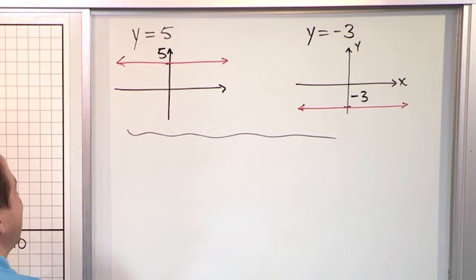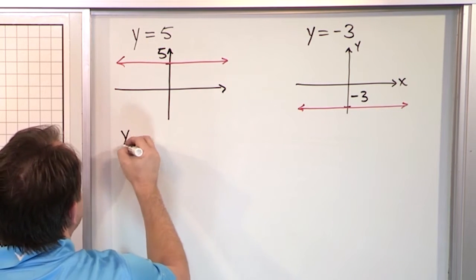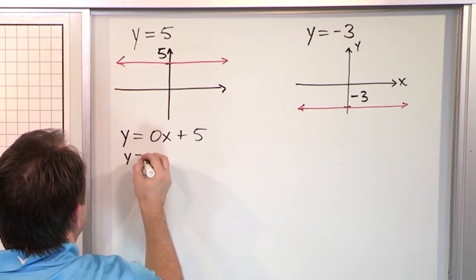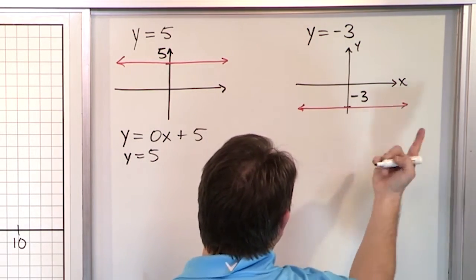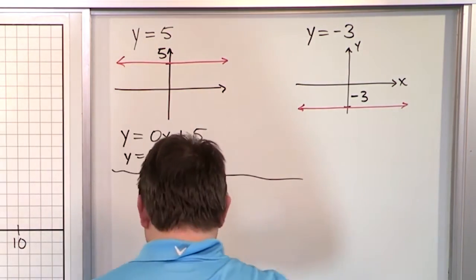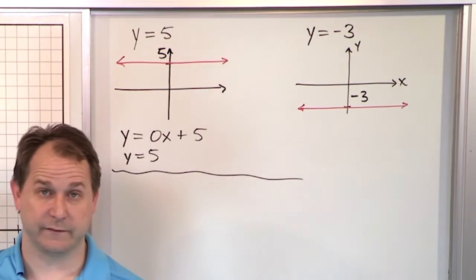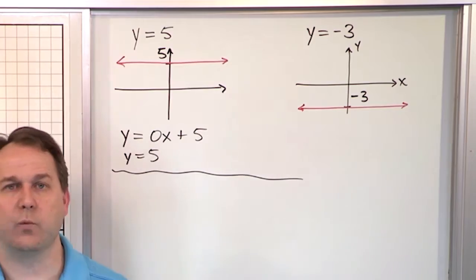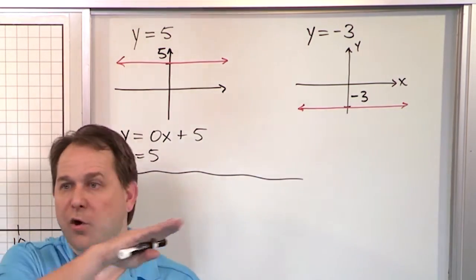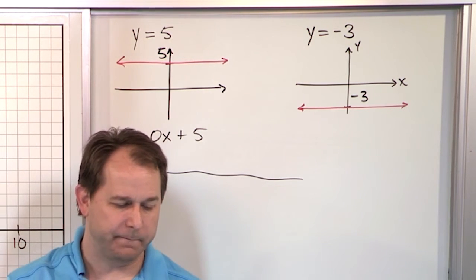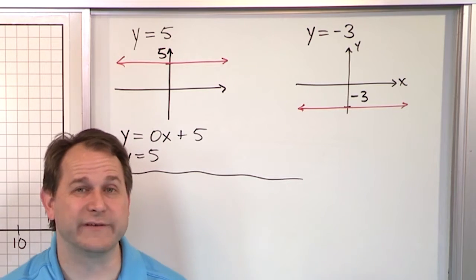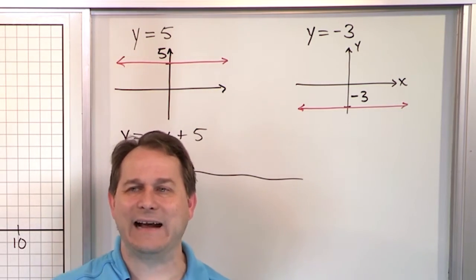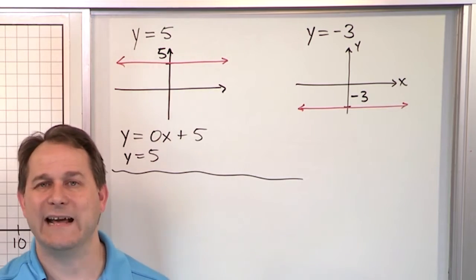If horizontal lines have the form y equals a number — y equals 6, y equals 0, y equals negative 3, y equals one half, y equals 5 seventeenths — they're all horizontal lines going through that point. What do you think the form of the equation of a vertical line will look like? It's not going to be y equals something, because that gives a horizontal line. The form for a vertical line is very similar but different — it's x equals a number. That always specifies a vertical line.